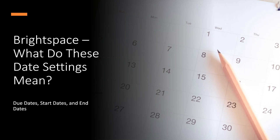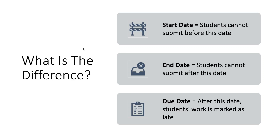Hello everyone, this is a quick video about Brightspace date settings. First, let's talk about the difference between these things, as it throws a lot of people off when they first start with Brightspace. A start date means students cannot submit to this activity before this date. An end date means students cannot submit after the date. A due date means after this date, late work will be marked as late, but it will not restrict them from submitting — they can still continue to submit.